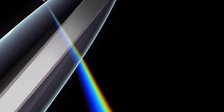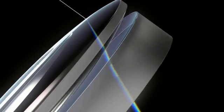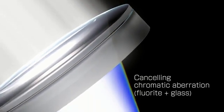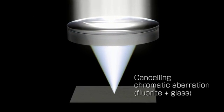This characteristic, called extraordinary dispersion, can be used to compensate for chromatic aberration by combining a fluorite lens with a glass lens.